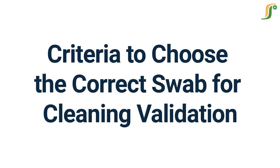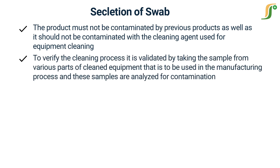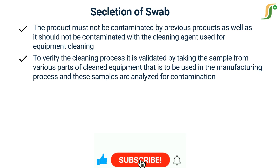Welcome to a new learning video on pharma guideline. Today we will discuss the criteria to choose the correct swab for cleaning validation in pharmaceutical manufacturing. The product must not be contaminated by previous products, and it should not be contaminated with the cleaning agent used for equipment cleaning. To verify the cleaning process, it is validated by taking samples from various parts of cleaned equipment that is to be used in the manufacturing process.